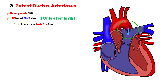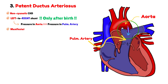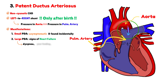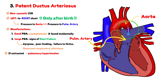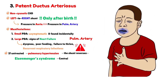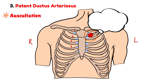Because the pressure in the aorta is higher than that in the pulmonary artery, blood continuously flows from the aorta into the pulmonary artery. Small patent ductus arteriosus defects are often asymptomatic, and typically discovered incidentally because of a characteristic heart murmur. Larger PDAs, however, can lead to signs of heart failure, including dyspnea, poor feeding, failure to thrive, and recurrent respiratory infections. If left untreated, chronic left-to-right shunting results in pulmonary hypertension, and as pulmonary vascular resistance increases, the shunt may reverse from right to left, leading to Eisenmenger's syndrome and the onset of central cyanosis. On examination, there is a continuous, machinery-like murmur, best heard below the left clavicle in the second intercostal space, often accompanied by a bounding pulse and widened pulse pressure due to diastolic runoff from the aorta into the pulmonary artery.